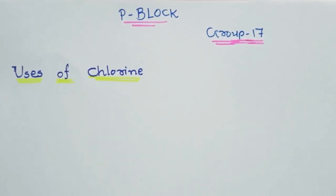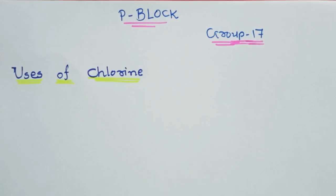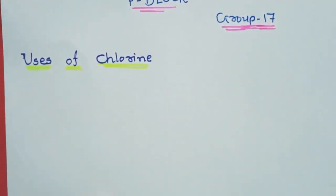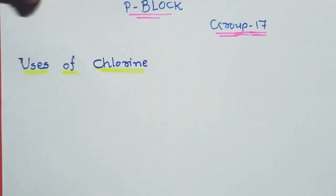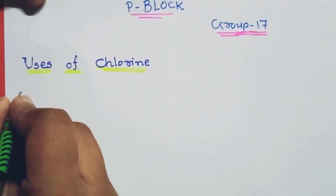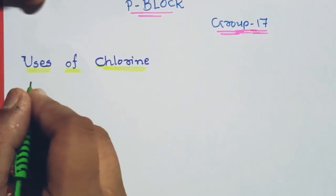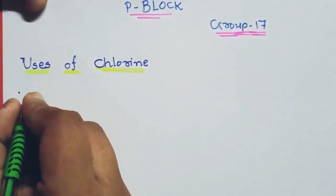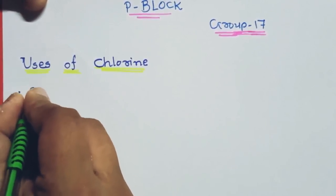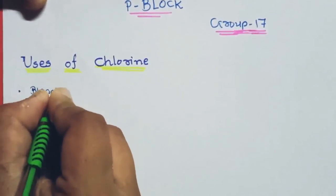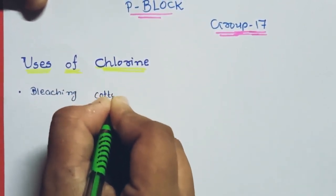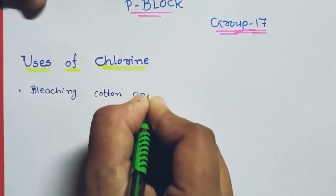In this lecture, we are going to see the uses of chlorine. You will know some uses, but we will not know all the uses, so we will see them here. The first use: chlorine is used as a bleaching agent for cotton and textiles in the cotton and textile industry.